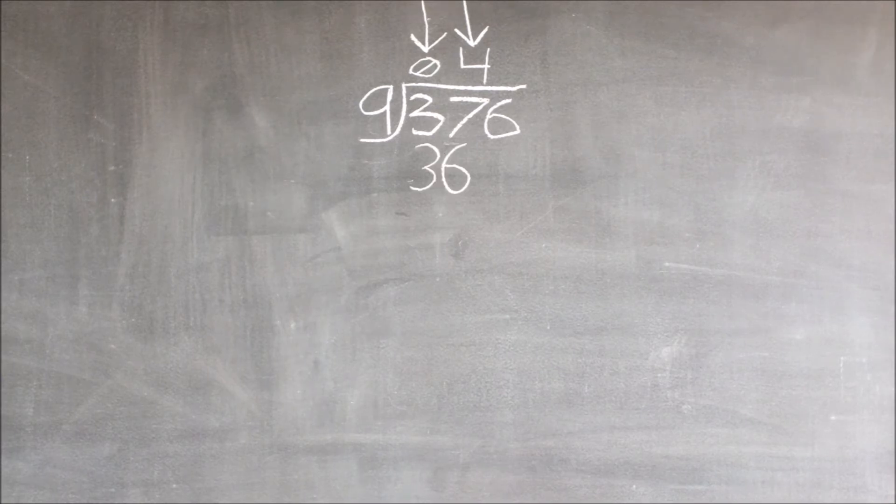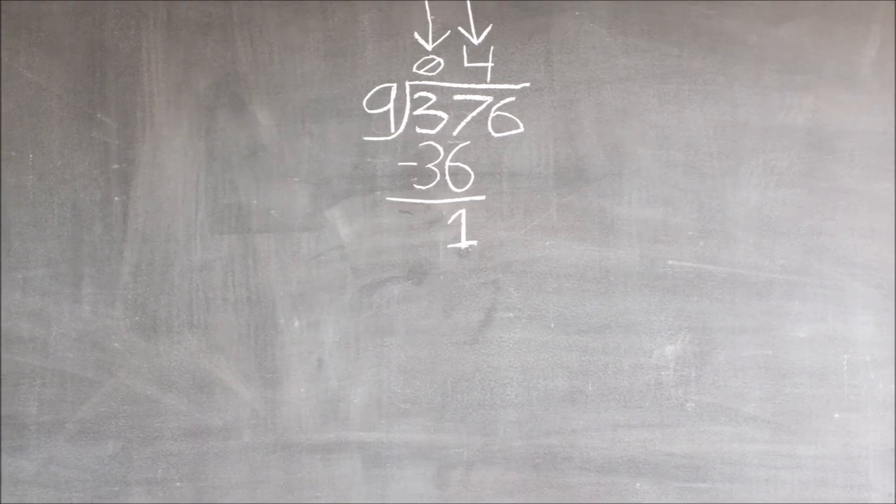We write nine times four, which equals 36 under the 37, and then we subtract them, which equals one.